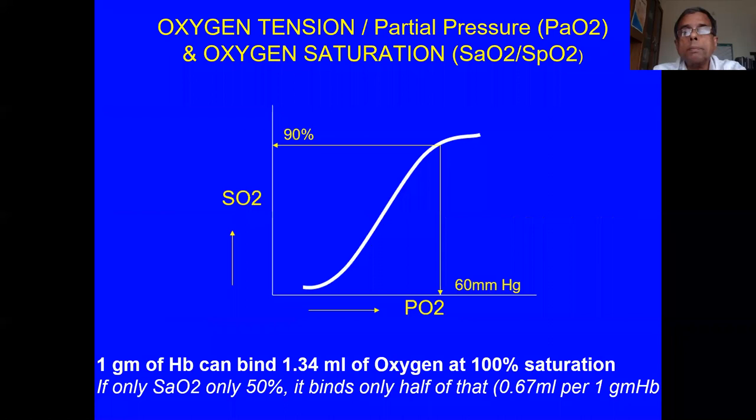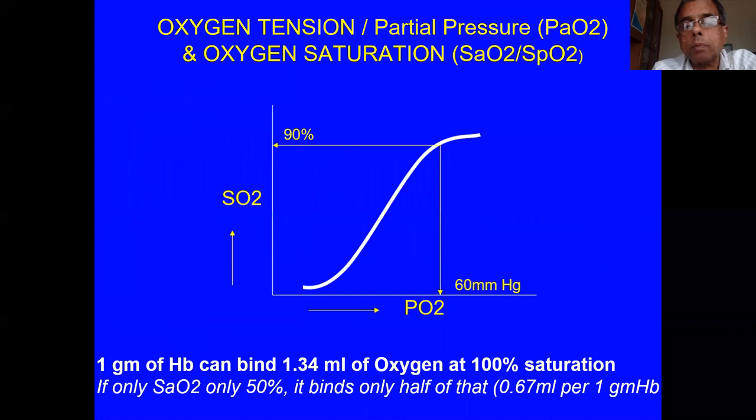The relationship between partial pressure of oxygen and saturation is a sigmoid curve. At 100% saturation, each gram of hemoglobin can bind 1.34 ml of oxygen; at 50% saturation it can bind only 0.67 ml. We will need more details about this in our lectures on shock.